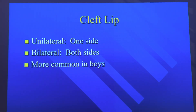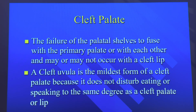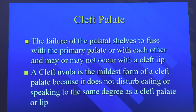A cleft lip is unilateral, which means one side — uni means one. Bi means two, so bilateral means both sides of the lip. This is more common in boys than girls. A cleft palate is the failure of the palatal shells to fuse with the primary palate or with each other. It may or may not happen with a cleft lip — you could have a cleft palate and not a cleft lip, and vice versa. A cleft uvula is the mildest form of a cleft palate because it does not disturb eating or speaking to the same degree.